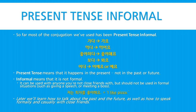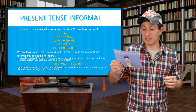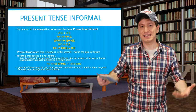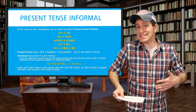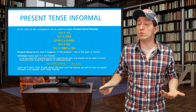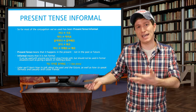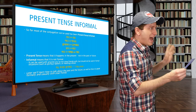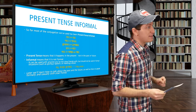Informal can be used with anyone you're not close friends with, but should not be used in a formal situation like giving a speech or meeting a boss. So an example of this present tense informal form would be 저는 피자를 좋아해요 — I like pizza. It's present tense, right now, and it's informal. It's not impolite, but it's not formal, so you wouldn't say it when you need to be extra formal. Later we will talk about past tense and future tense, as well as formal and casual speech, but right now let's focus on this form.